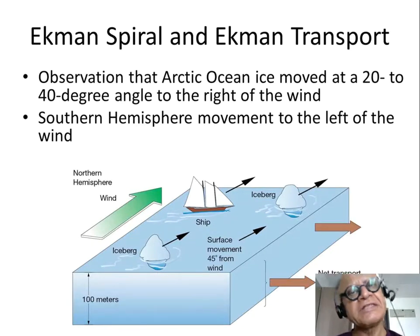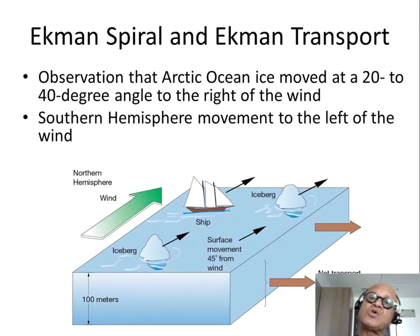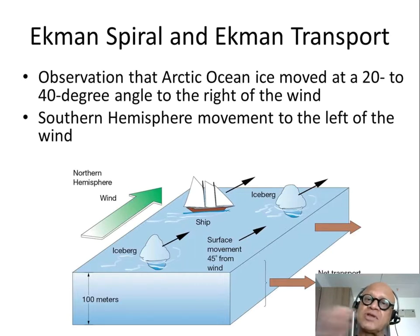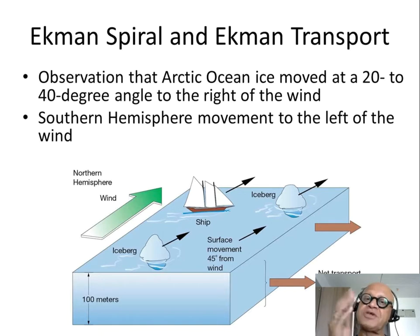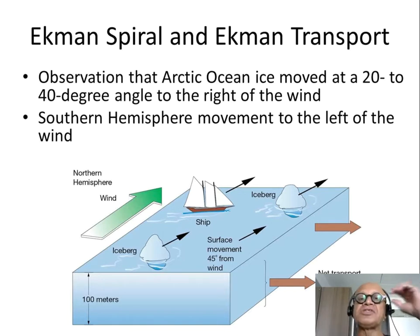We have been saying that winds drag the ocean, friction is important, that's what generates currents. And once the water starts moving, it experiences the Coriolis effect and gets tilted to the right in the northern hemisphere, to the left in the southern hemisphere.